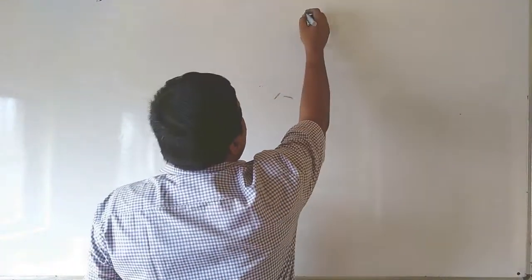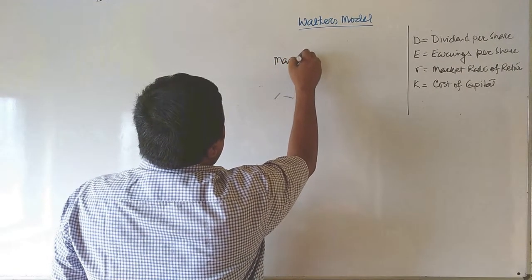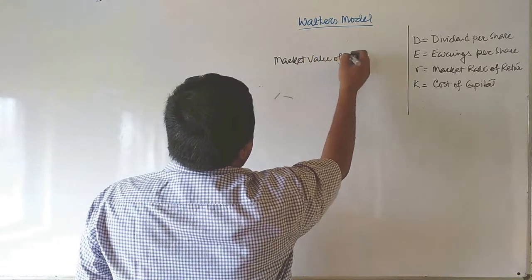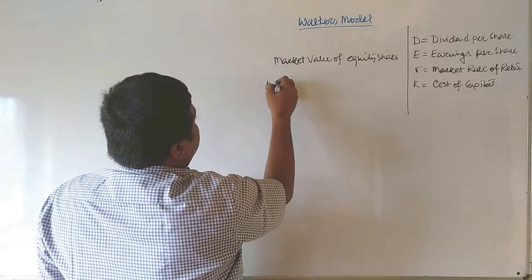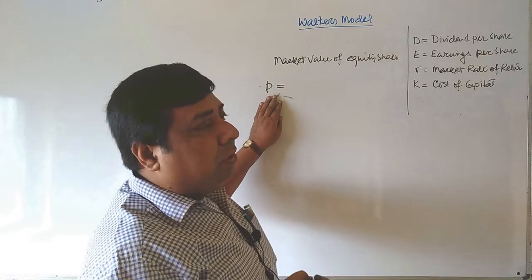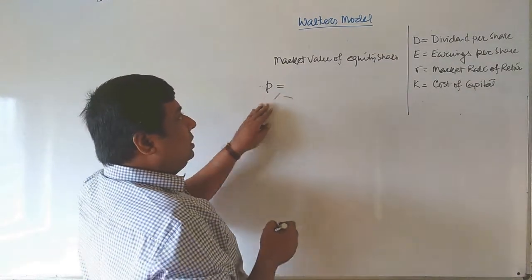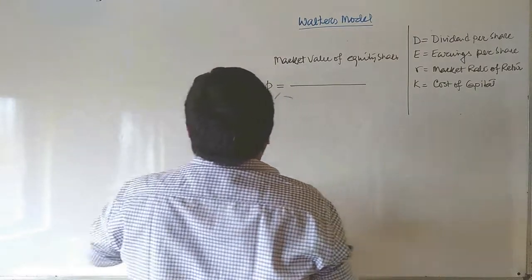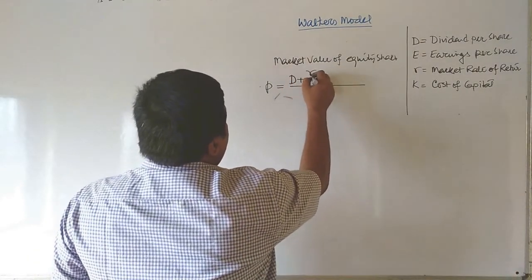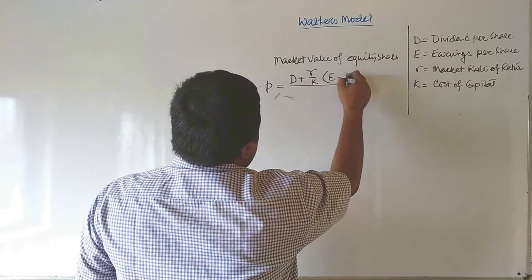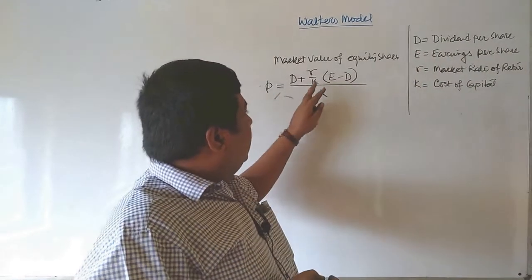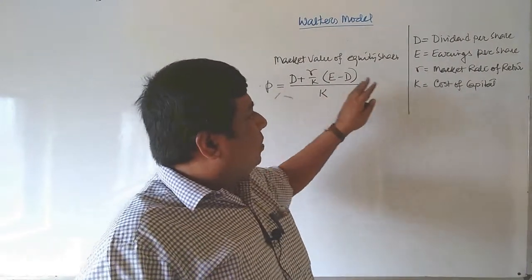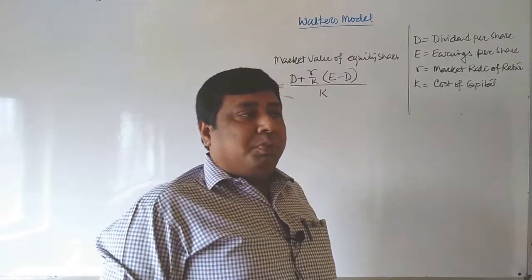Now we are going to discuss Walter's model. The market value of equity shares, which is considered as P — P stands for market value per share — can be calculated by the formula: P = [D + (R/K)(E − D)] / K. Here, D stands for Dividend Per Share, E stands for Earnings Per Share, R stands for the market rate of return, and K stands for cost of capital.